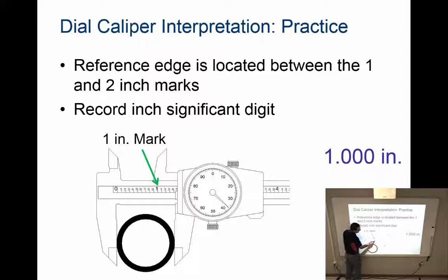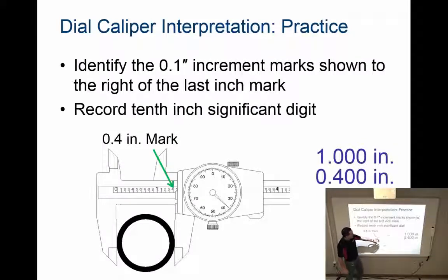Then I want to record the number of tenths. I have point one, point two, point three, point four. This is my reference edge. I see the number five, but I'm not to number five yet. The line is always going to come after. The line we're looking for is after the number. So even though I see the five, I'm not to five yet. It's point four. So one for whole inches, point four off my reference edge.